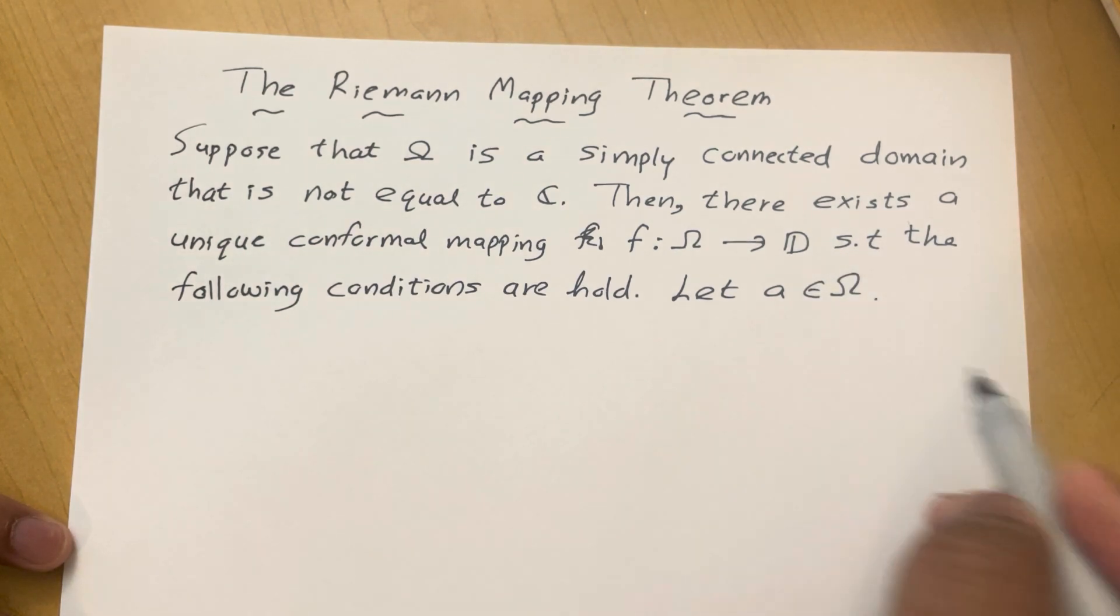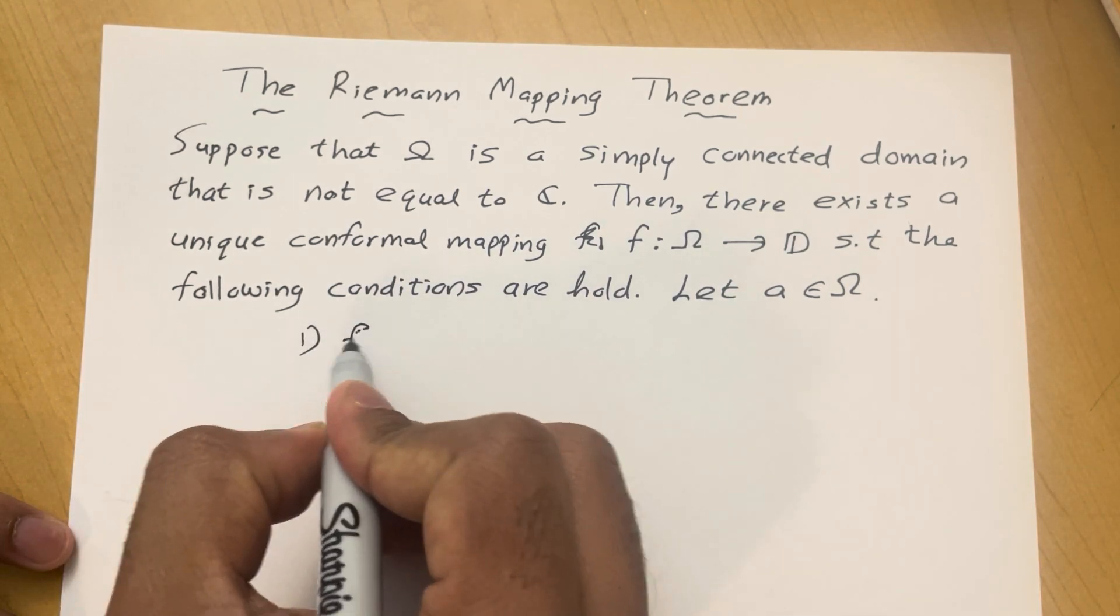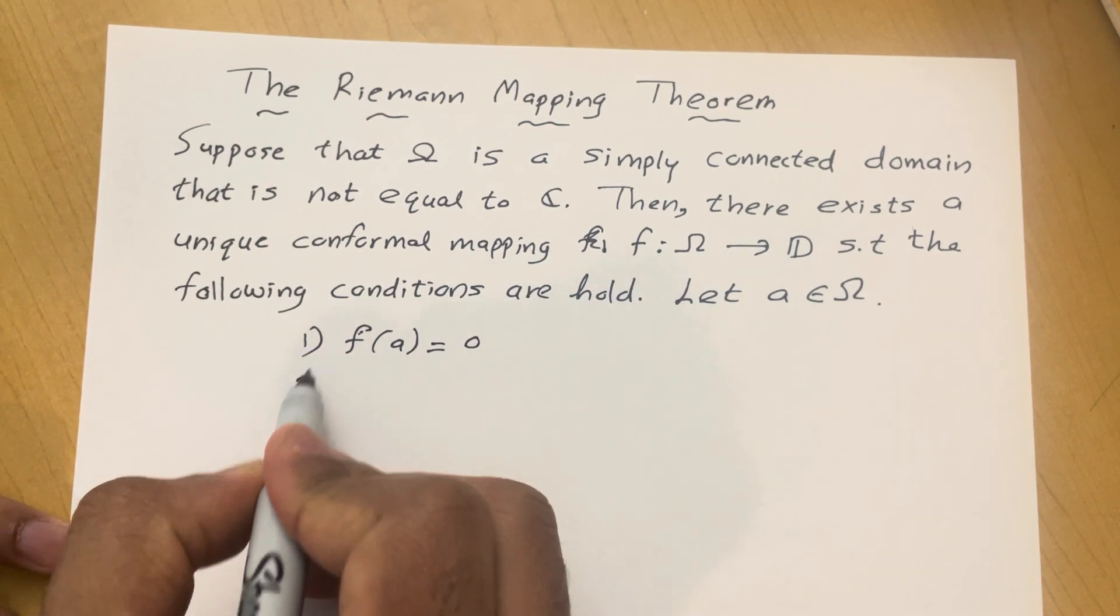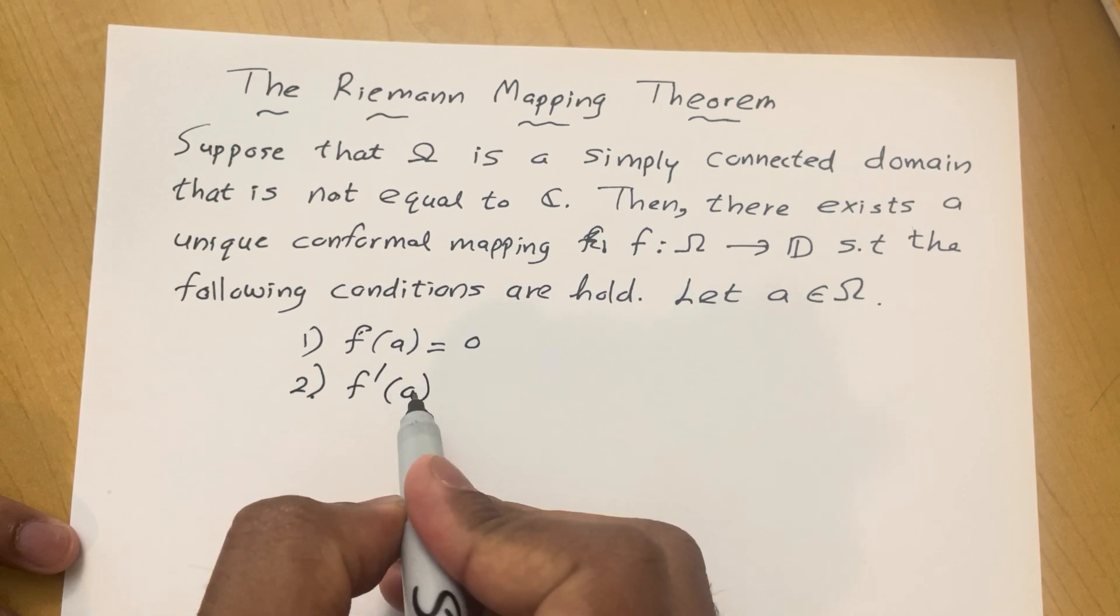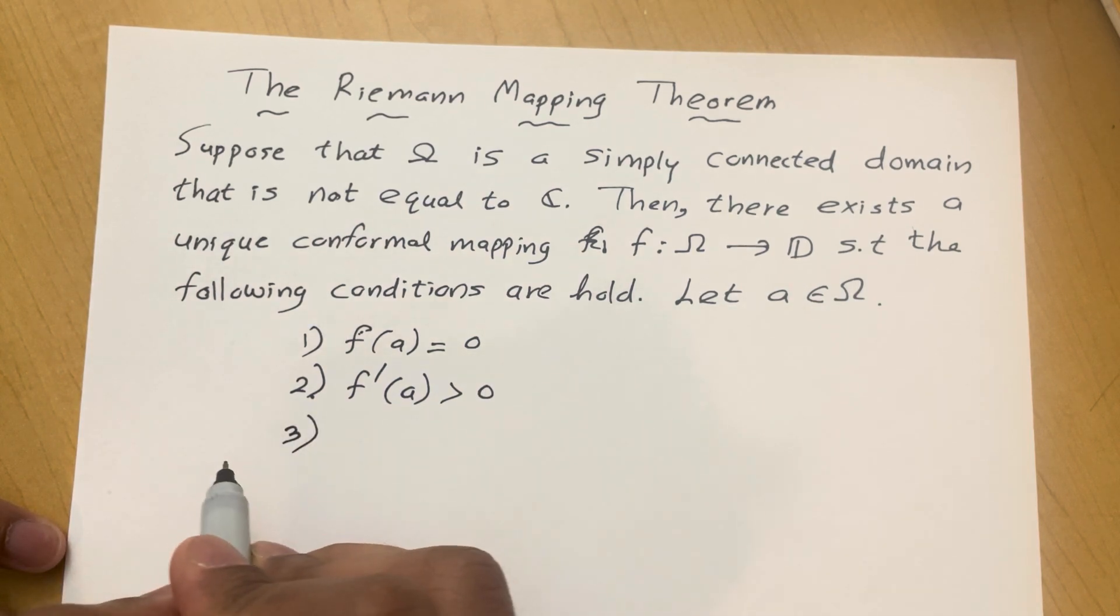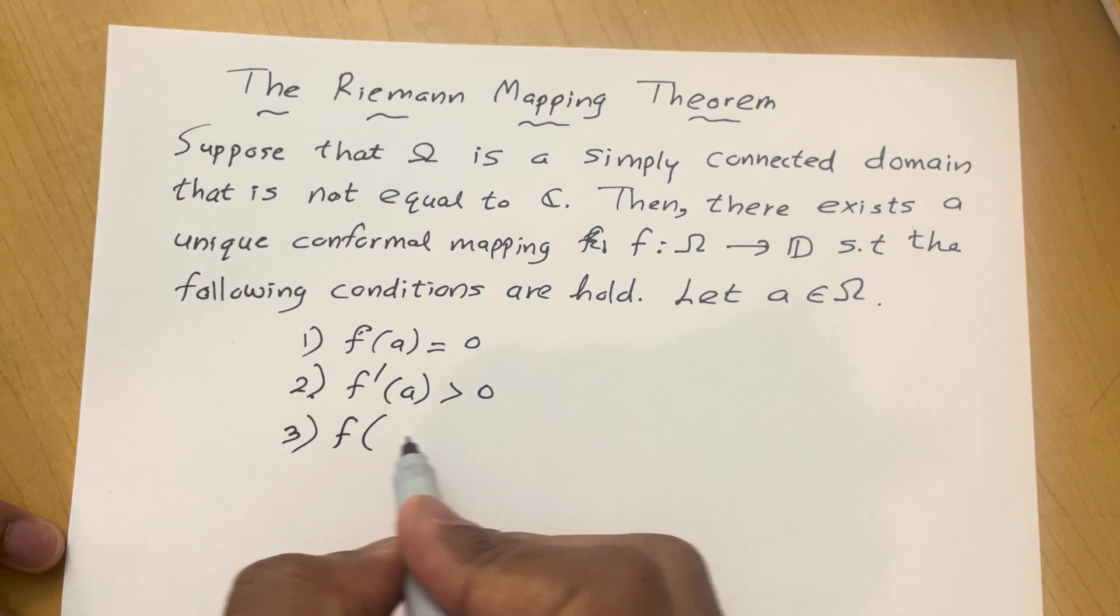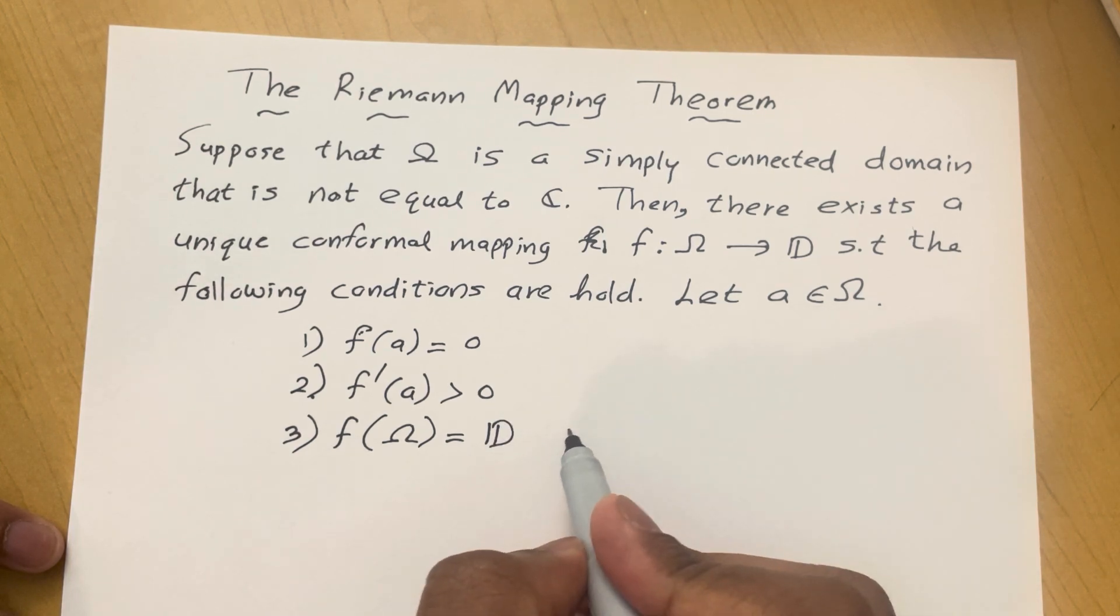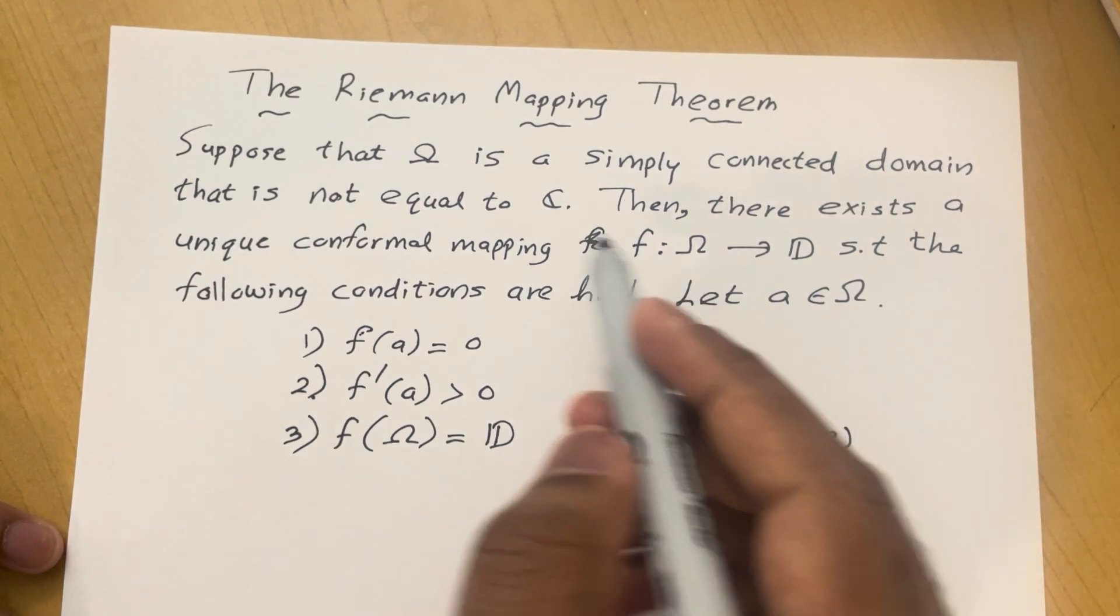So a be any arbitrary point in this domain Ω. What are the conditions? The first condition is f(a) equals 0, and the second condition is if you evaluate the derivative of the function at the point a it is going to be positive, and third condition is the image of the function f is going to be equal to the unit disk. So f is surjective.